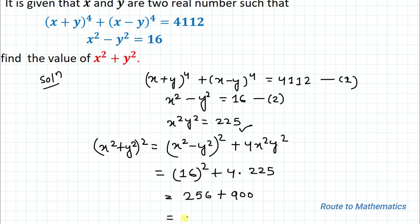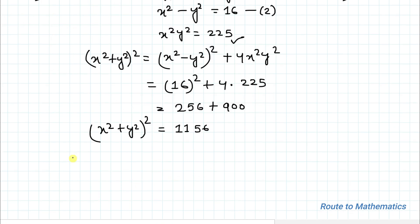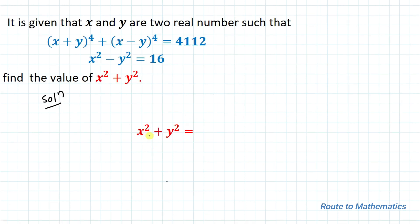So (x²+y²)² = 1156, which implies x²+y² = √1156 = 34. Thus, the value of x²+y² is 34. I hope you have understood the solution. Thanks for watching — please subscribe to my channel and hit the like button for more such interesting questions.